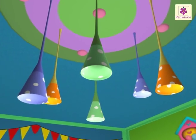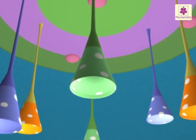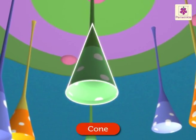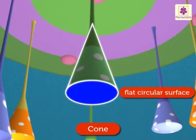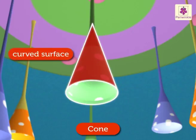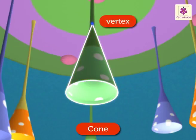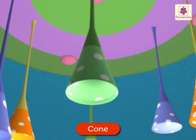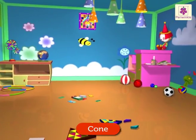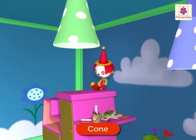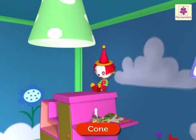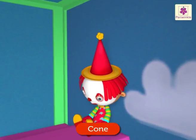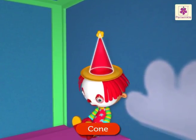The colorful lampshades hanging on the wall are cone-shaped. A cone has one flat circular surface and one curved surface. It has one vertex. Can you search for a clown with a cap? Yes, there it is — the clown cap is also in the shape of a cone.